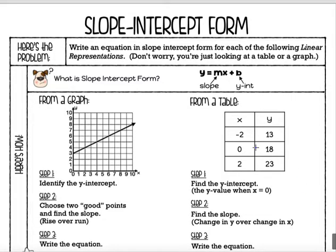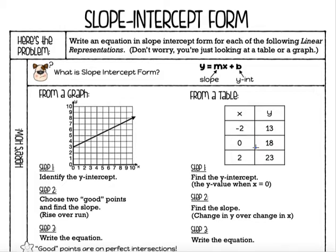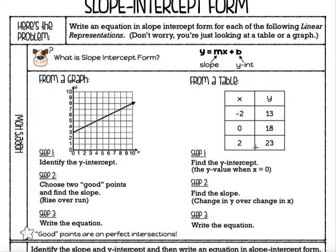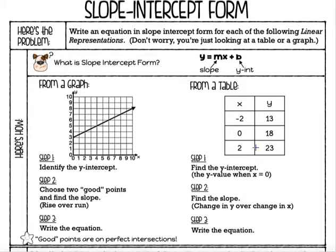Take out this worksheet — the one that says slope-intercept form — and you can follow along with me as I go through the examples. If you don't have a copy of that worksheet, that's okay, you can still follow along anyway. The problem is we are going to write an equation in slope-intercept form for each of the following linear representations. When you see the words 'linear representations,' don't worry — all it means is that it's a straight line or a situation where there's a constant rate of change, which is exactly what we've been doing.